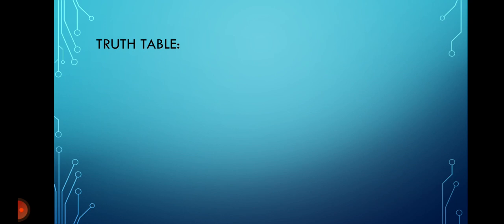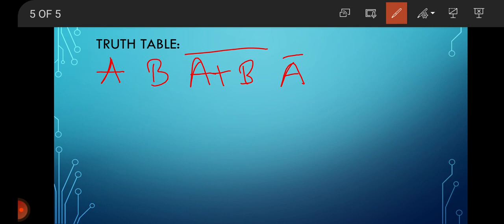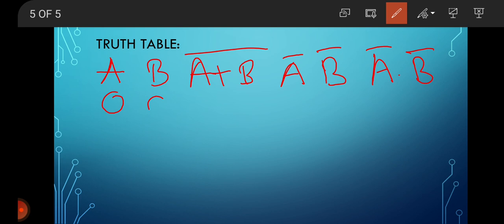Now see the truth table. Inputs are A and B. Our LHS is (A plus B) bar. Then take complements of the inputs: Ā and B̄. Our RHS is Ā into B̄. Take A=0, B=0: put in (A plus B) bar, we get 1. Then A=0, B=1: we get 0. Then A=1, B=0: we get 0. Then A=1, B=1: we get 0.